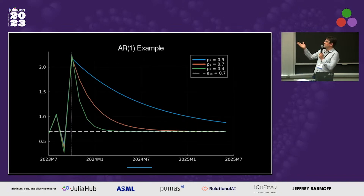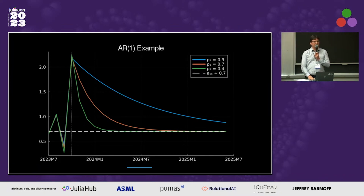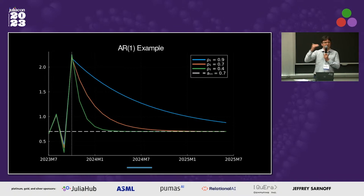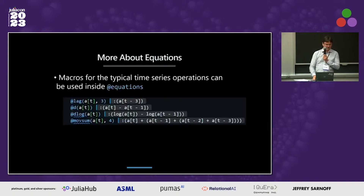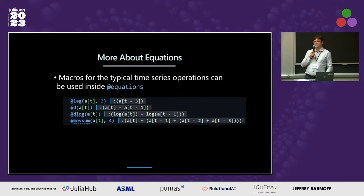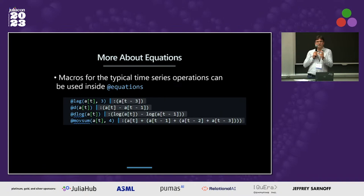Here is an example of a simulation. We have four periods with some shocks, and then the system relaxes to its steady state. How fast it relaxes depends on Rho1, and the steady state doesn't change because Rho0 adjusted automatically. We also have extra macros that can be used inside equation blocks to create shortcuts for some of the most typical time series operations.